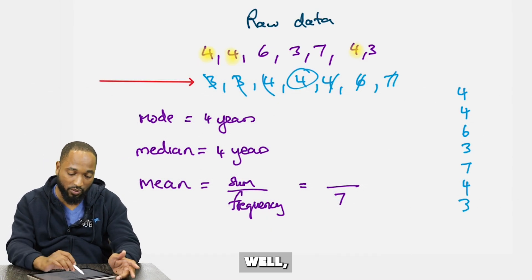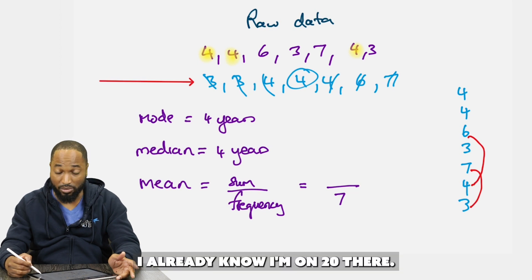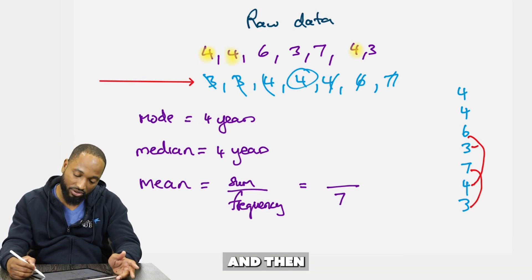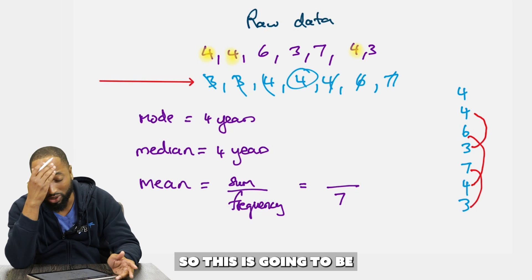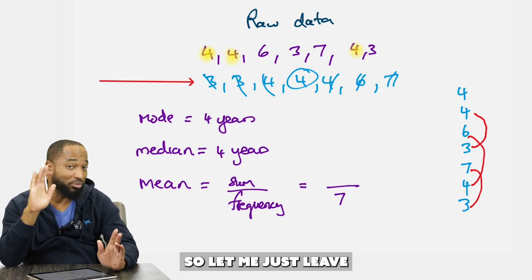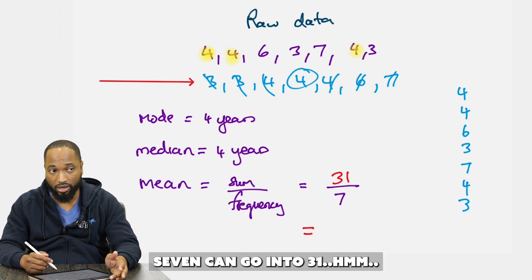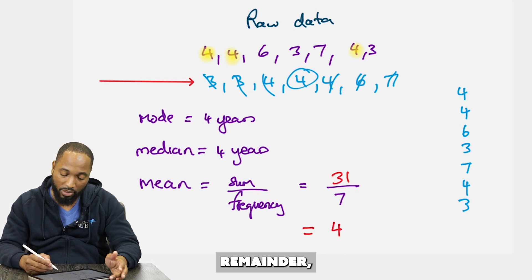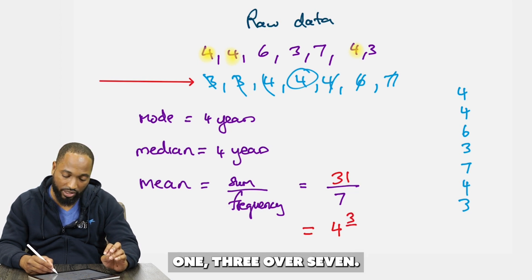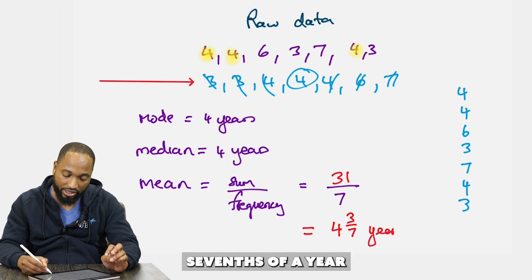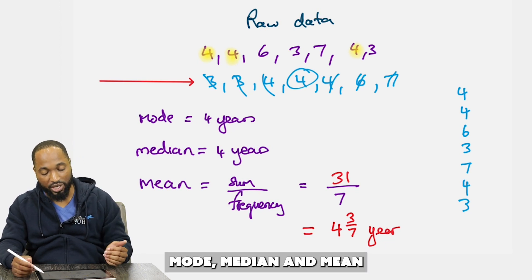To add them, look for numbers that make 10: 7+3 and 6+4 gives 20, then 3+4 is 7, so 20+7+4 = 31. Now 31 divided by 7: 7 goes into 31 four times with remainder 3, giving 4 and 3/7. So the mean age is 4 and 3 sevenths of a year. That's how we find mode, median, and mean of raw data.